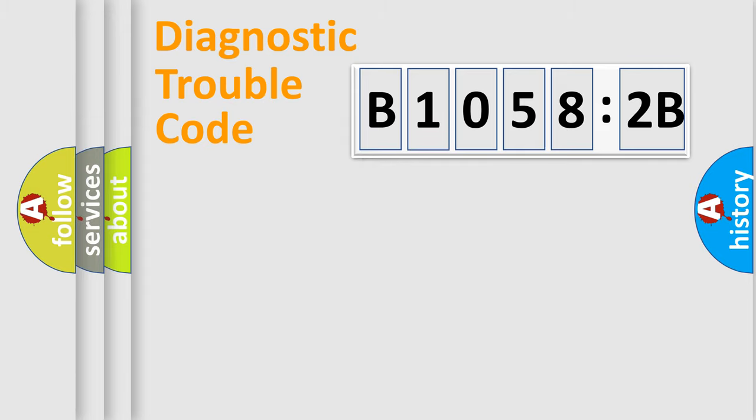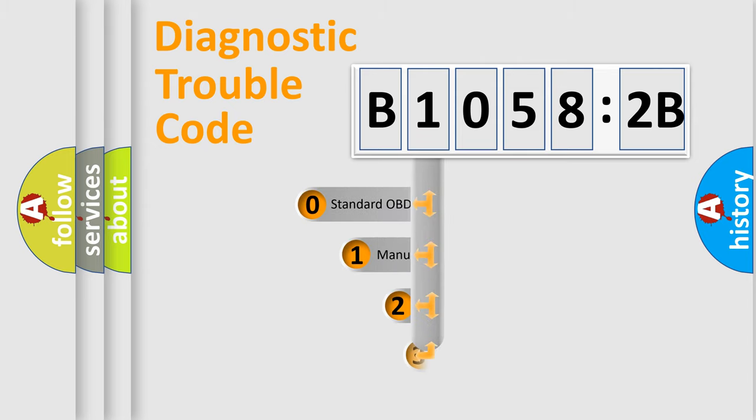Powertrain, Body, Chassis, Network. This distribution is defined in the first character code.